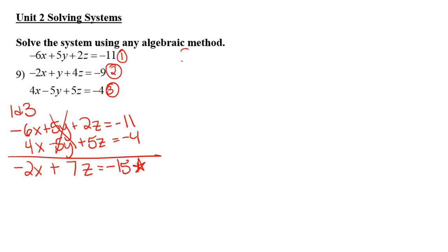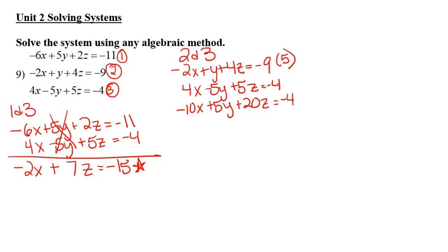I now want to pair two and three. Negative 2x plus y plus 4z is negative 9, and 4x minus 5y plus 5z is negative 4. Notice the y's are not going to cancel. And I need to cancel out y's because that's what I did here. So I'm going to multiply the top by a positive 5. So I'm going to get negative 10x plus 5y plus 20z is equal to negative 45. Y's are gone. So I'm going to get negative 6x plus 25z, just adding stuff together here, and then negative 49. Let's star that.